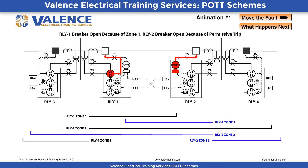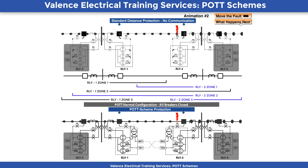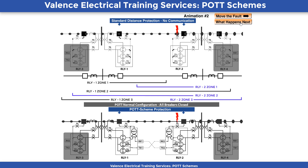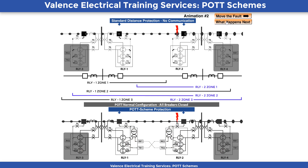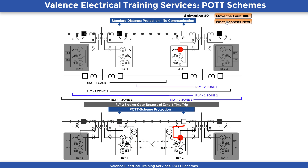Let's look at a fault that is closer to Relay 2, but this time we'll compare it to a standard distance protection scheme. This fault is a mirror image of the previous one, with the standard distance scheme on top of the screen and the POT scheme shown on the bottom of the screen. This time Relay 2 sees a Zone 1 and Zone 2 pickup, while Relay 1 sees a Zone 2 pickup. Relay 2 will trip instantaneously in both protection schemes because Zone 1 will always trip first as it has no intentional time delay.